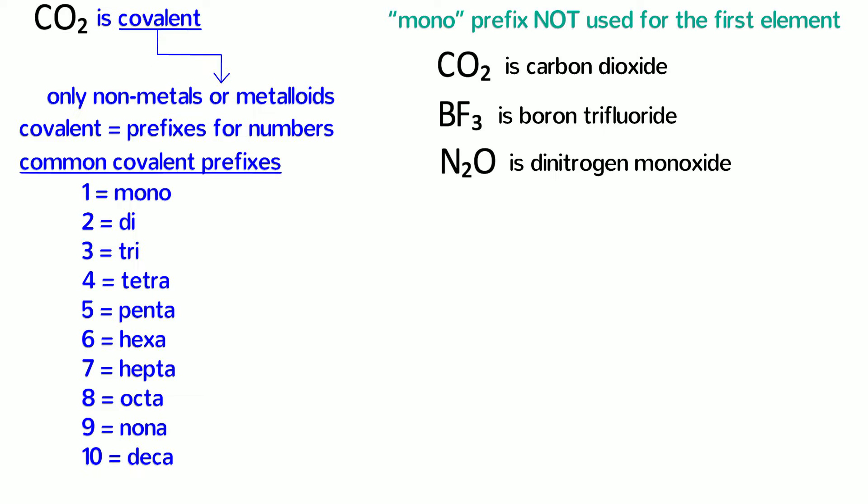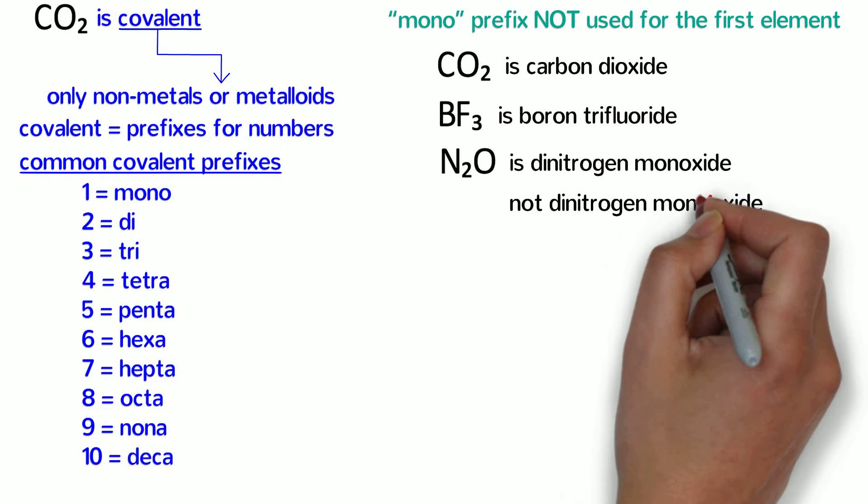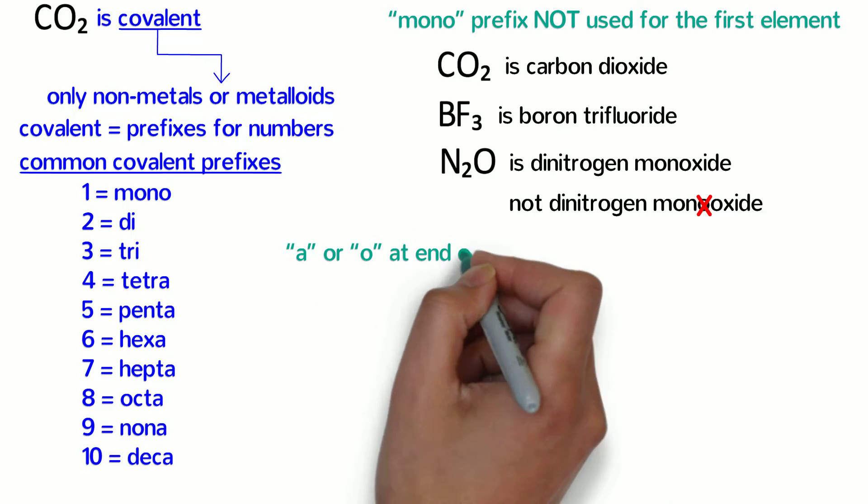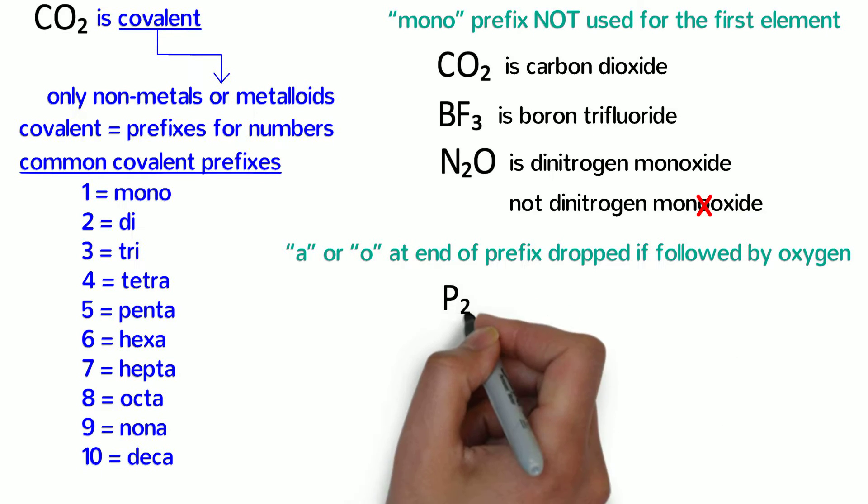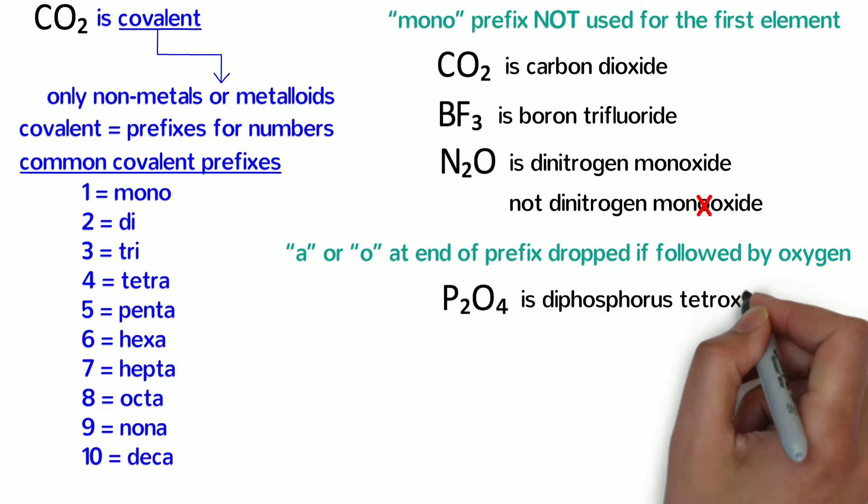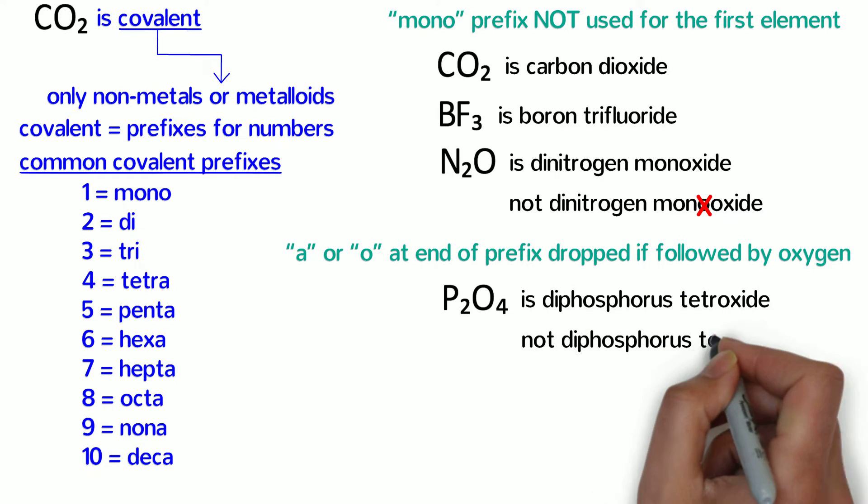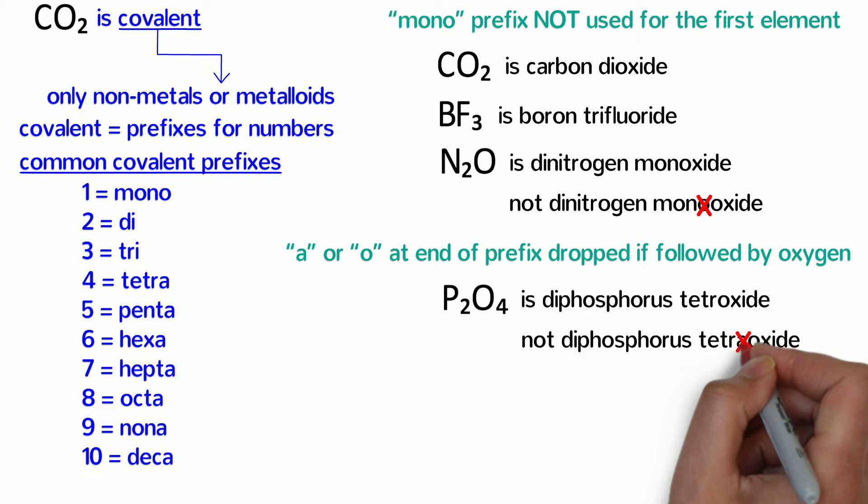Notice also that the mono lost its last O. It is not dinitrogen monooxide. In general, an A or O at the end of a prefix will be dropped if followed by oxygen. So P2O4 is diphosphorus tetroxide, not diphosphorus tetraoxide because the A is dropped.